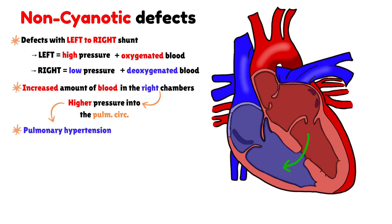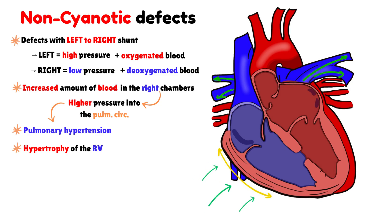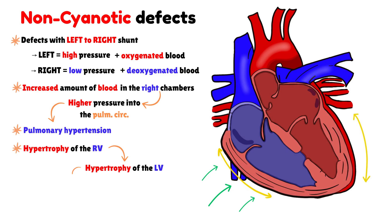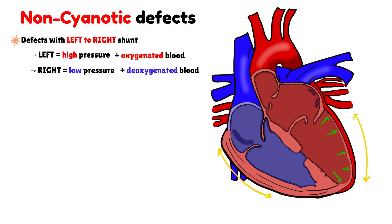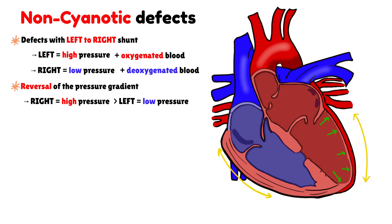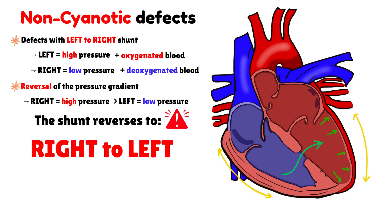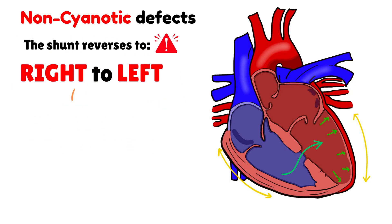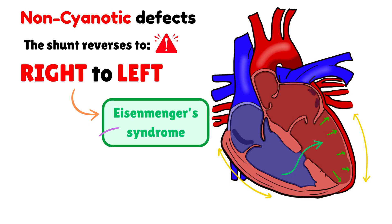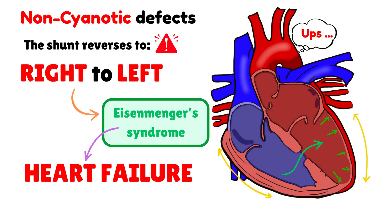As a compensatory response, the right ventricle gradually hypertrophies in an attempt to handle the increased pressure and volume. The left side of the heart may also become hypertrophic at first, and later dilate to accommodate the larger volume of blood returning from the lungs. Over time, this entire process can cause a reversal of the pressure gradient, so that the pressure on the right side becomes greater than on the left. When this happens, the direction of blood flow reverses from right to left, and deoxygenated blood begins to enter the systemic circulation. This condition is known as Eisenmenger's syndrome. Eventually, all of these cardiac changes combined can lead to heart failure, due to the heart's inability to perform its normal function.